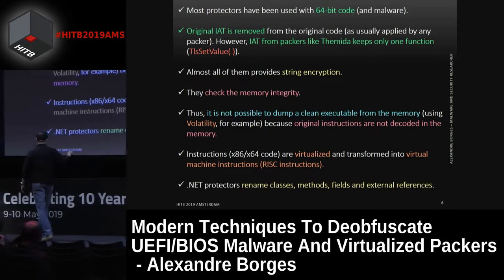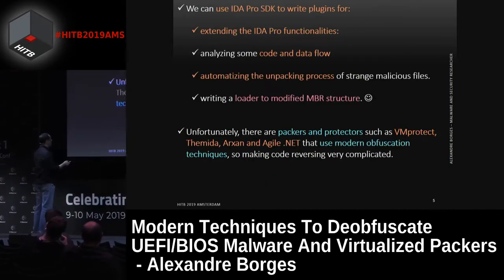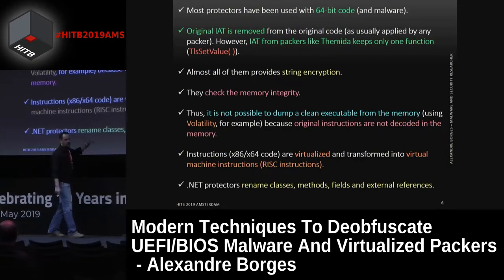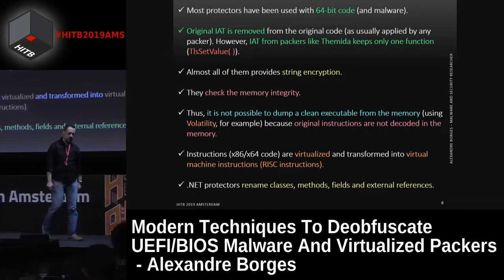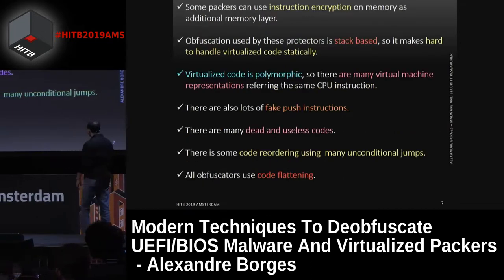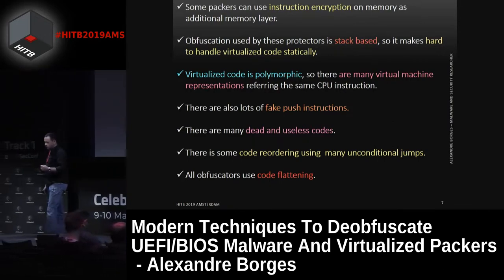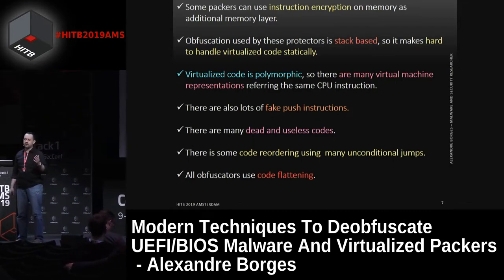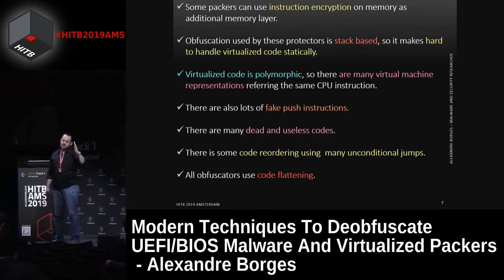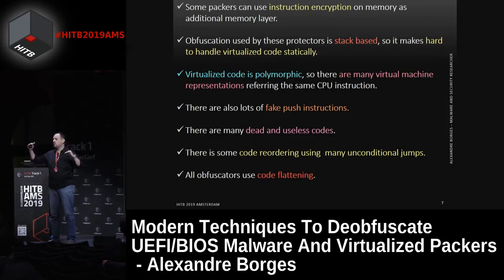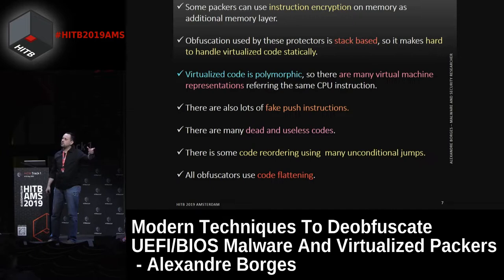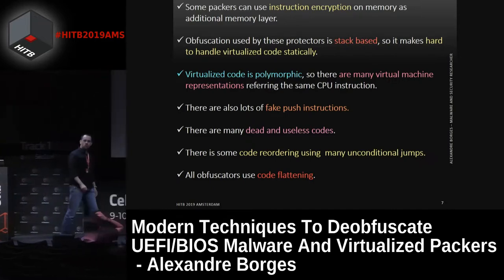When you use .NET protectors — for example, protectors such as Agile.NET — these guys try to rename classes, methods, fields, and external references, making our lives so difficult. Some packers, as I mentioned, try to encrypt the instructions, giving us a very complicated scenario. I have x86 instructions being translated to virtual instructions, and these instructions are encrypted in memory. So we need to decrypt these instructions and reverse the process to find the original instructions. It's a very time-consuming job.